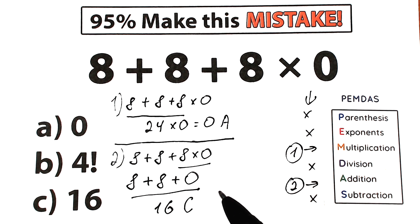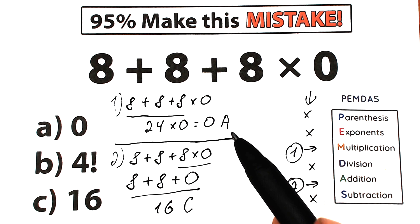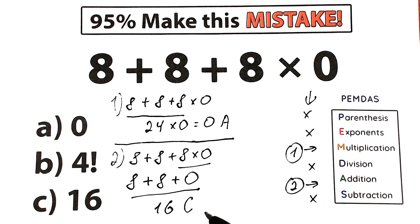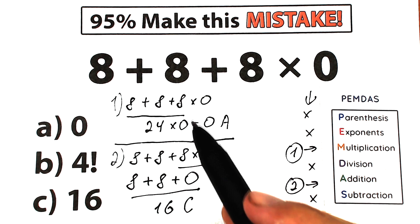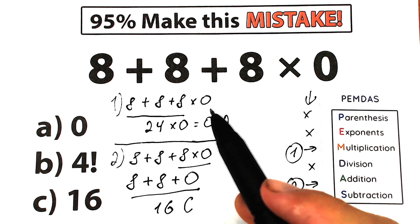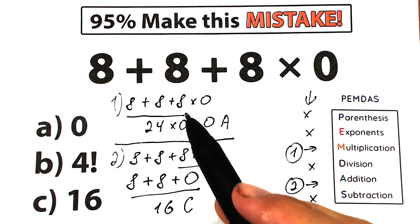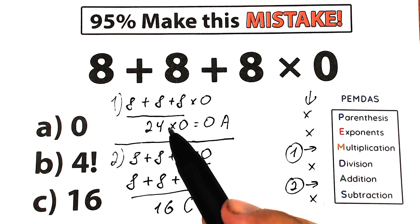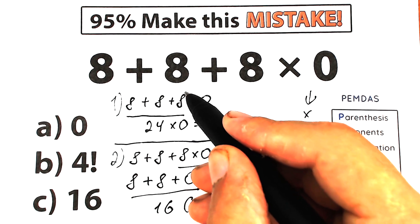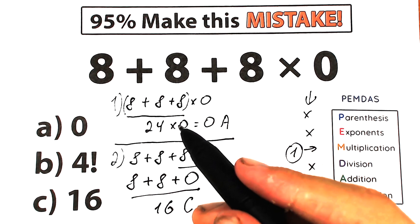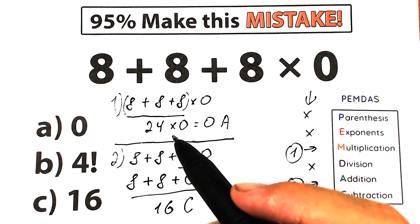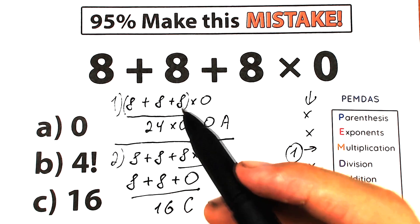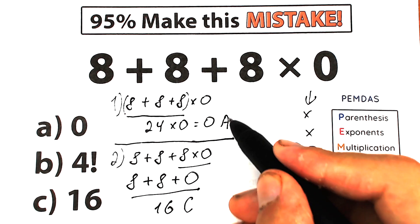A lot of students argue about the correct answer — one group says option A, another says option C. The first interpretation, solving left to right without order of operations, is absolutely wrong. If we had brackets — for example, parentheses around 8 plus 8 plus 8 — then we'd evaluate inside first: 8 plus 8 plus 8 equals 24, and 24 times 0 equals 0. That would be correct with brackets. But in our case there are no brackets, so option A is absolutely the wrong answer.